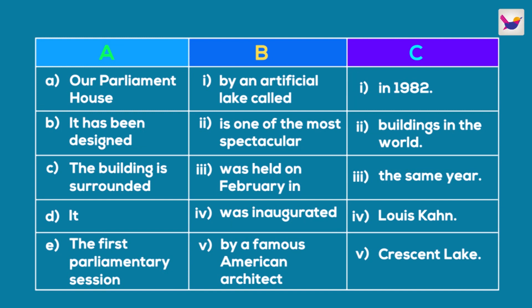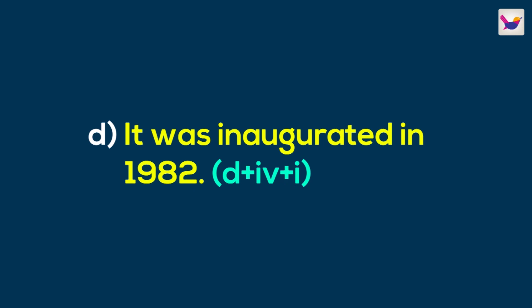The fourth subject from column A is 'It.' The options in column B include 'was inaugurated' and 'was held on February.' To form a meaningful sentence, we select 'was inaugurated.' From column C, the matching option is 'in 1982.' Therefore, the complete sentence is: It was inaugurated in 1982.